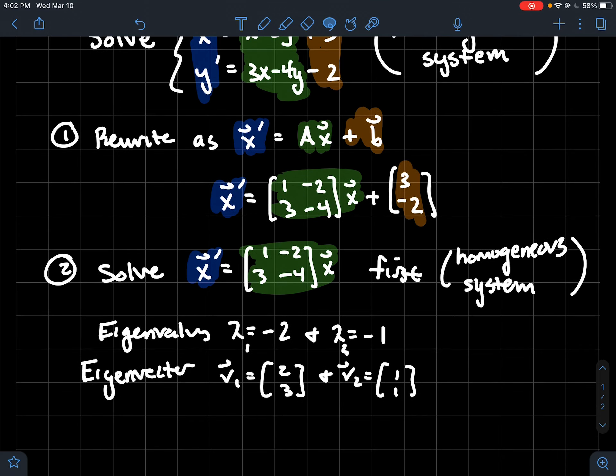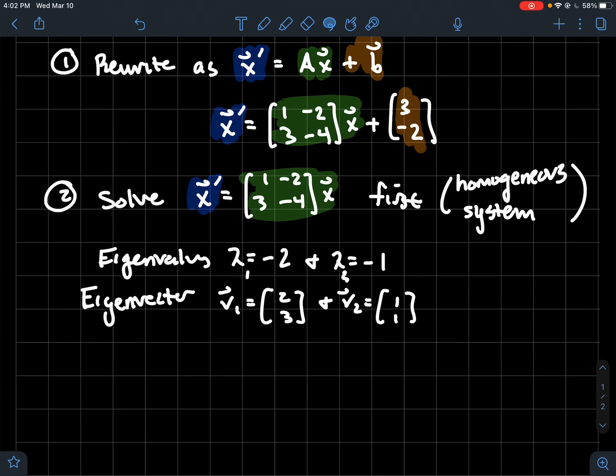You could use Wolfram Alpha to find those, I'm not showing you my work for how to get them. Then recall, once you've got both of these, you can use these to form the general solution to the system in step two, in other words to the homogeneous system.